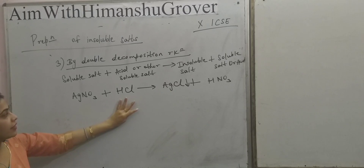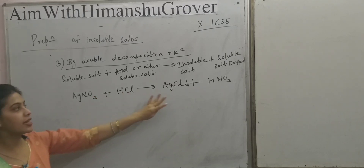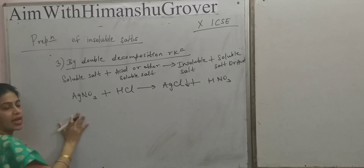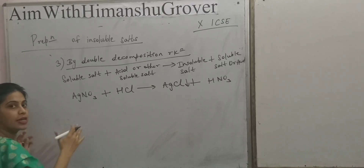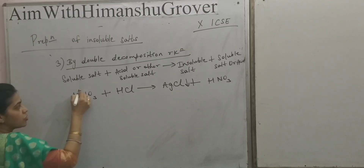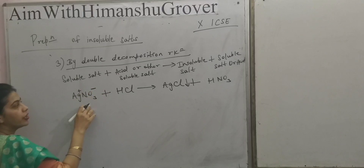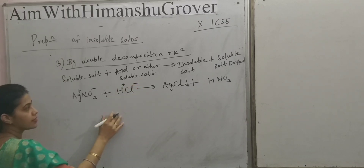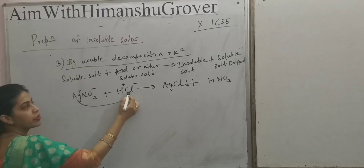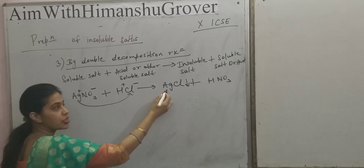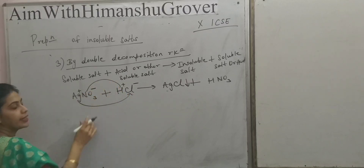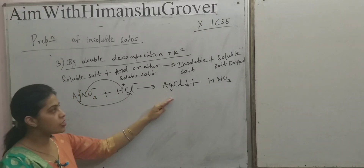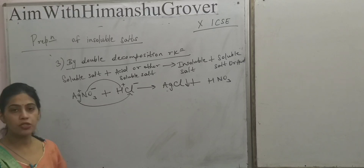AgNO3 when reacted with HCl forms HNO3 and AgCl. AgCl is a precipitate — a white colour precipitate is formed. This is a double decomposition reaction, which means an exchange of radicals takes place. Silver, Ag+, is a positive radical and NO3− is a negative radical. H+ is positive and Cl− is negative. Ag+ combines with Cl− to form AgCl, which is a precipitate, and H+ combines with NO3− to form HNO3. So the products formed are an insoluble salt and an acid.